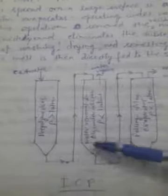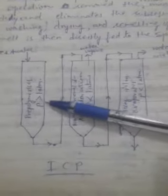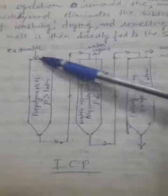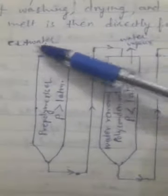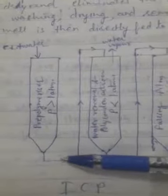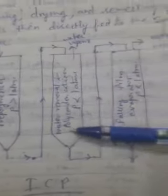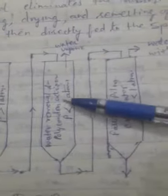In the first vessel — the pre-polymerizer — pressure is kept above 1 atm. Caprolactam and water are fed here, where ring opening and pre-polymerization take place, producing small PCL molecules. These are fed to the next vessel — the polycondensation reactor — where water is removed under vacuum below 1 atm pressure.